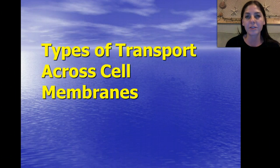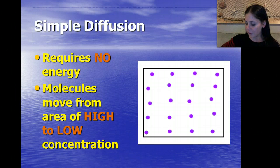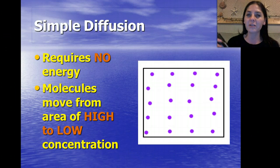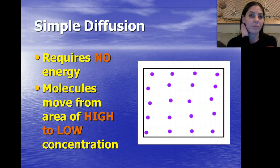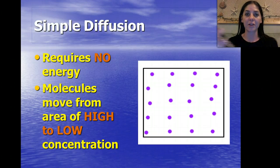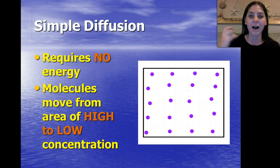There are different types of transport across a membrane. First, we have simple diffusion. This requires no energy — it's just when molecules move from a very high concentration to a low concentration. For example, if you sprayed Axe at the front of a room, that would be a very high concentration. It would diffuse outward — the front row smells it first, then the second row, the third, and eventually someone at the back of the room can smell it. That's simple diffusion: moving from high concentration to low concentration and spreading out equally.